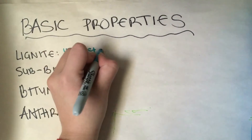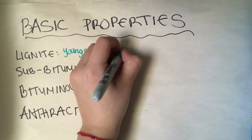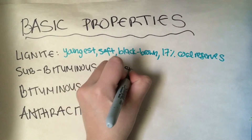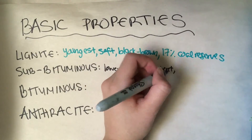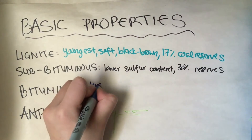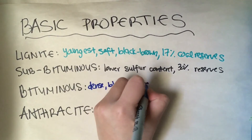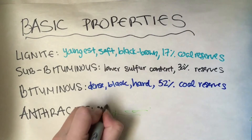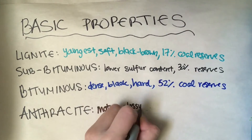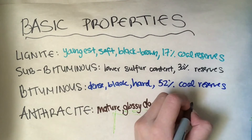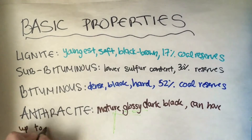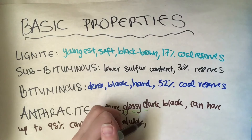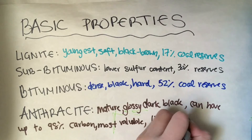Going through the properties of each rank of coal: lignite is the youngest form — it is soft, has traces of plant matter, has high water and sulfur content, ranges from black to brown, and makes up 17% of coal reserves in the world. Subbituminous has properties in between lignite and bituminous, burns more cleanly due to lower sulfur content, and makes up 30% of world coal reserves. Bituminous is dense, hard, black in color, burns with a smoky flame, is the most common variety, and makes up 52% of world coal reserves. Anthracite is the most mature and pure form — hard, glossy dark black, has low sulfur content, burns with a smoky flame, is lightweight in comparison, can have up to 98% carbon, and is the most valuable but hardest to find, making up only 1% of world coal reserves.